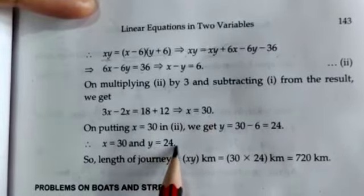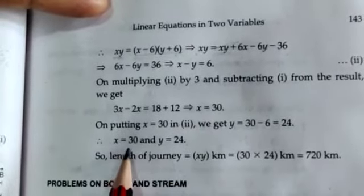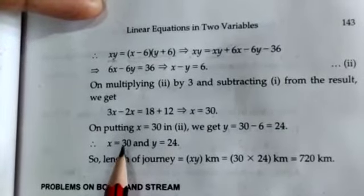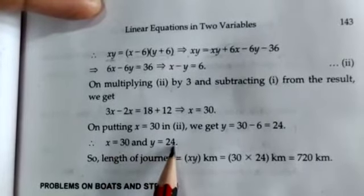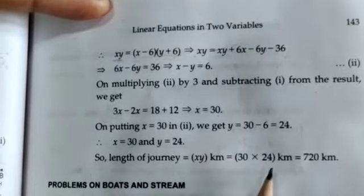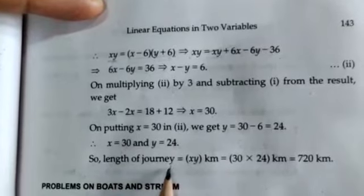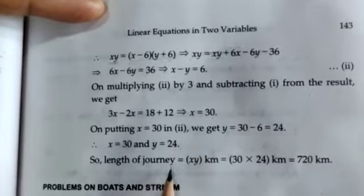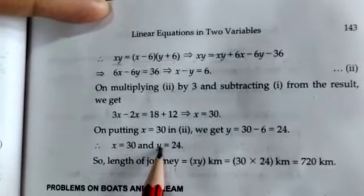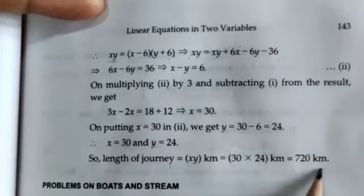So x = 30 and y = 24, meaning the original speed of the train is 30 km per hour and the actual time taken is 24 hours. The length of the journey is the distance between the two places: speed × time = x × y = 30 × 24 = 720 kilometres.